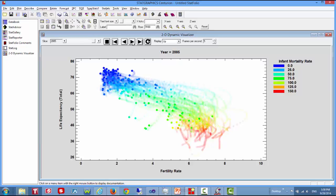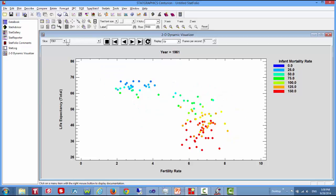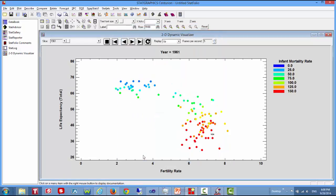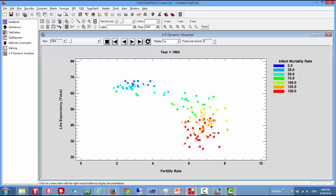If there are particular countries I want to highlight, I can also do that. Let's bring it back to 1961, push the analysis options button, and ask for a label to be placed on Yemen. It's now put a little YEM above the bubble for Yemen. And you'll see, when I let time run now, quite an interesting track for Yemen.